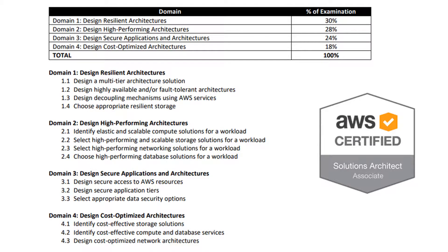Let me walk you through the course agenda. The examination itself is divided into four different domains. Domain one is designing resilient architectures, where you'll be tested on designing a multi-tier architecture solution, highly available and fault-tolerant architectures, designing decoupling mechanisms using AWS services, and choosing the appropriate resilient storage.